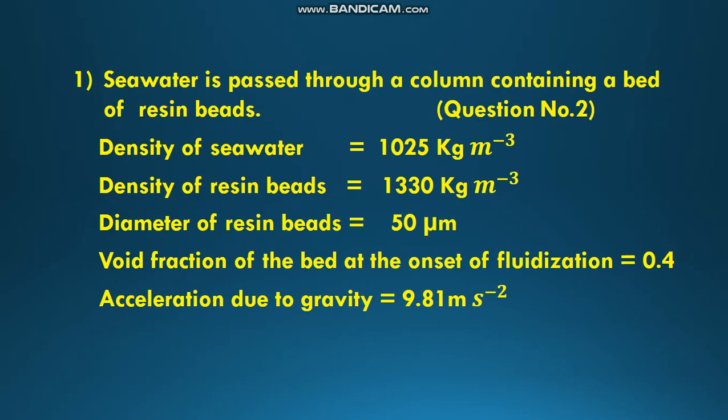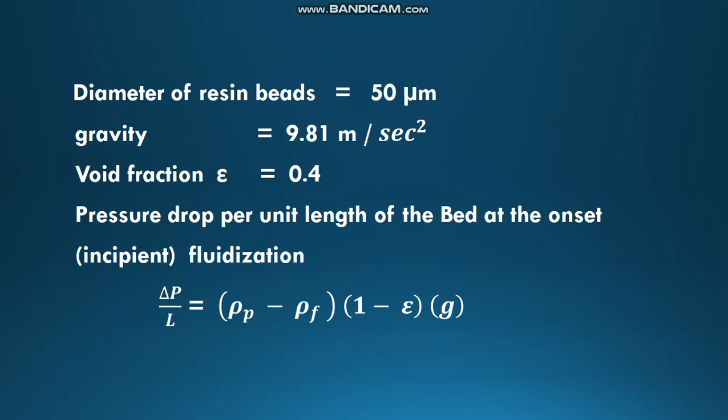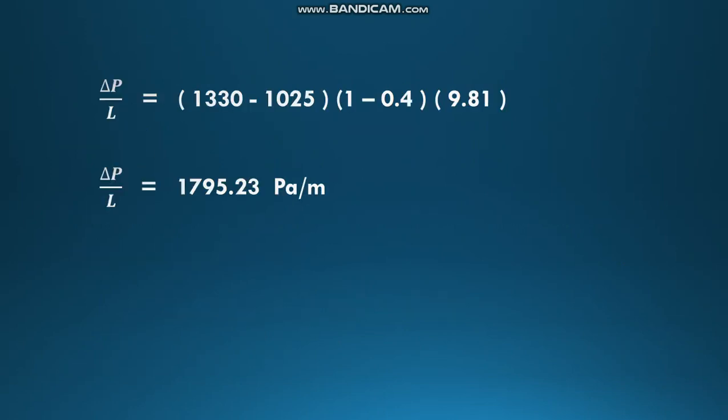For calculating this, since seawater is passing through a column containing a bed of resin beads, we use the formula: pressure drop per unit length of the bed at the onset of fluidization is given by Δp/L = (ρ_p - ρ_f)(1 - ε)g.